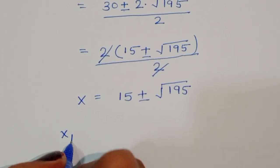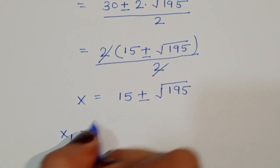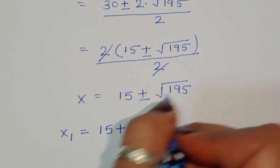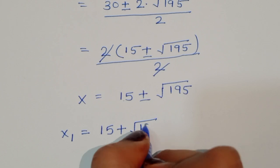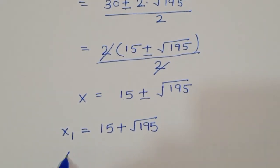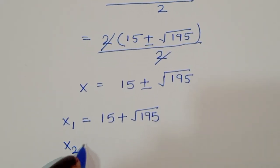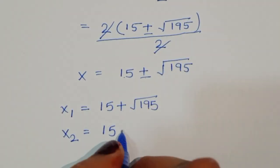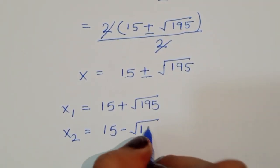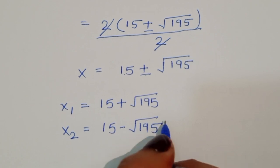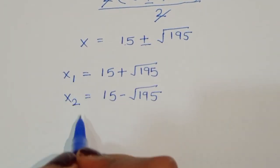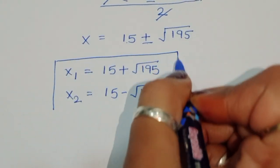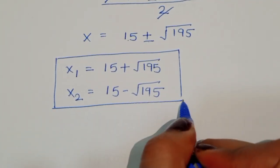So x1 equals 15 plus square root of 195, and x2 equals 15 minus square root of 195. We have found both values for x, and now we need to find the corresponding values of y1 and y2.